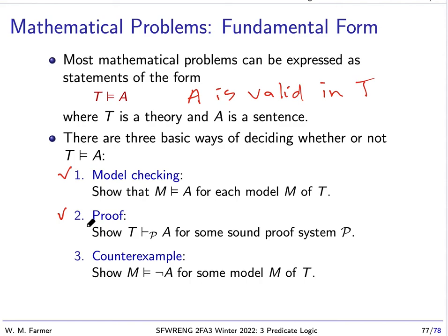And, let's say there is no proof. Let's say this is actually not true. Well, that brings us to the third approach. We come up with a counterexample. We come up with a model of T, which is not a model of A. In other words, it's a model of not A, the negation of A.